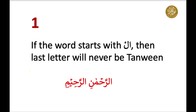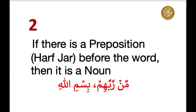Number two: if there is a preposition or harfezar appearing before the word, then it is a noun. For example, 'mirabbihim' — 'min' came before 'rabbihim', so 'rabb' is a noun. Next, 'bismillahi' — 'ba' is a harfezar or preposition, and 'ism' is a noun.